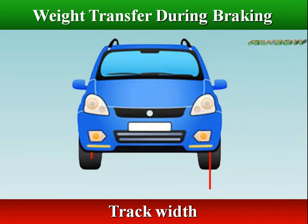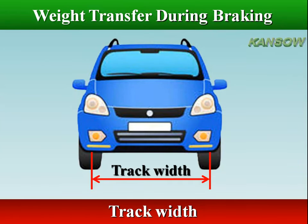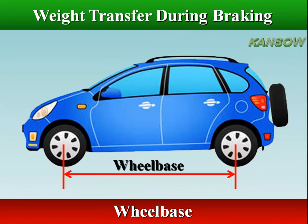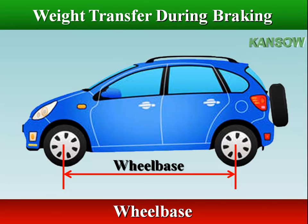Track width is the measurement between the center lines of the tires when viewed from the front or rear of the vehicle, and it is important because it determines how much weight is transferred by the mass of the car in cornering. Wheelbase is the measurement of the distance between the centers of the front and rear wheels when viewed from the side. The wheelbase is important because it determines the weight transferred by the mass of the car in acceleration and braking, as well as the yaw characteristics in turning.